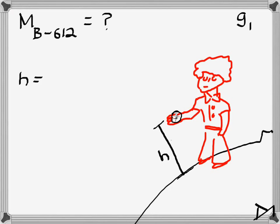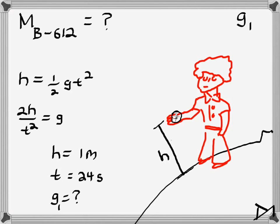The first way, he drops his rock. We know that if he drops his rock, we can solve for the gravitational acceleration by timing how long it takes to fall a height h. If he drops it from a height of 1 meter, it takes 24 seconds on his world. So therefore, what's the gravitational acceleration?